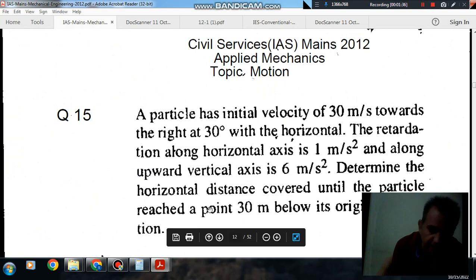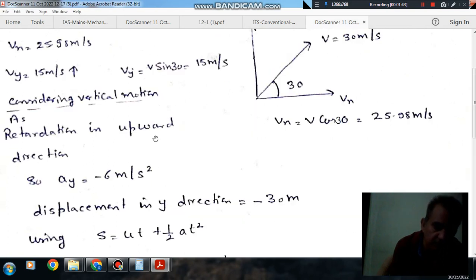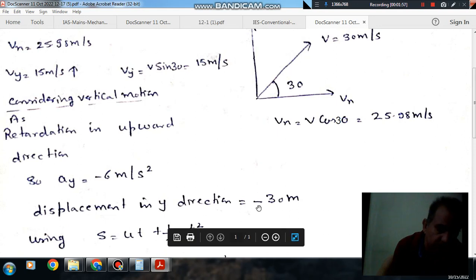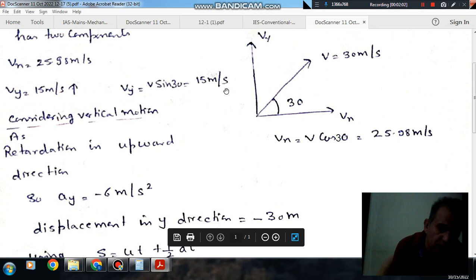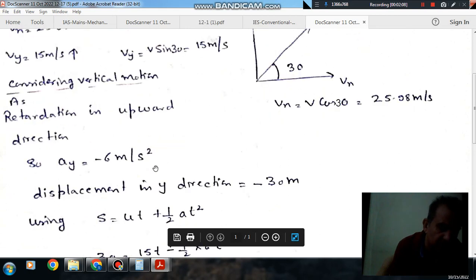So it means that the displacement is in a direction opposite to that of velocity. The initial velocity is in the upward direction, but the displacement is in downward direction. So displacement is minus 30 m and taking velocity positive, velocity is 15 m per second and acceleration in positive direction is minus 6 m per second squared.